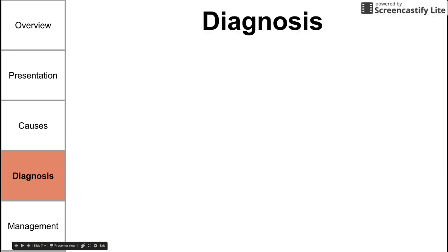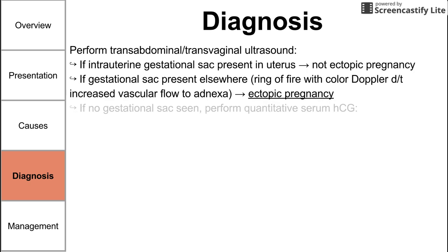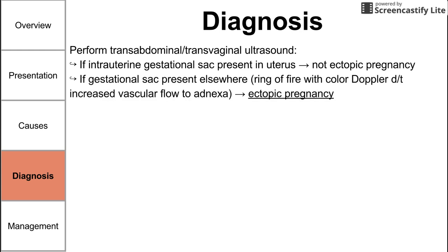For the diagnostic algorithm: if you suspect an ectopic pregnancy based on symptoms and signs discussed earlier, you want to do two tests — an ultrasound and a beta-HCG. Begin with the ultrasound, either transabdominal or transvaginal. If the ultrasound shows a gestational sac present in the uterus, it's not an ectopic pregnancy. If it shows a gestational sac elsewhere, it is an ectopic pregnancy by definition. This may appear as a ring of fire sign, and Doppler will show increased vascular flow to the adnexa.